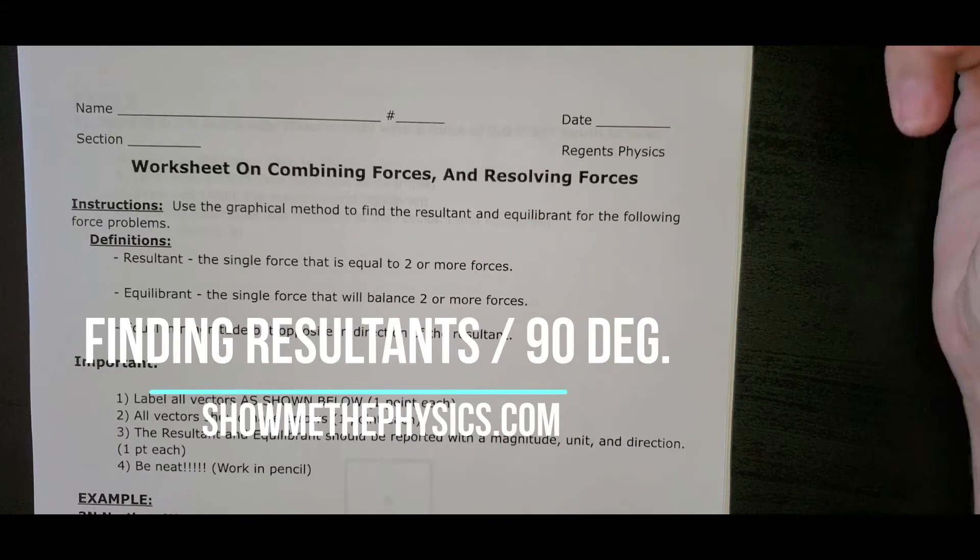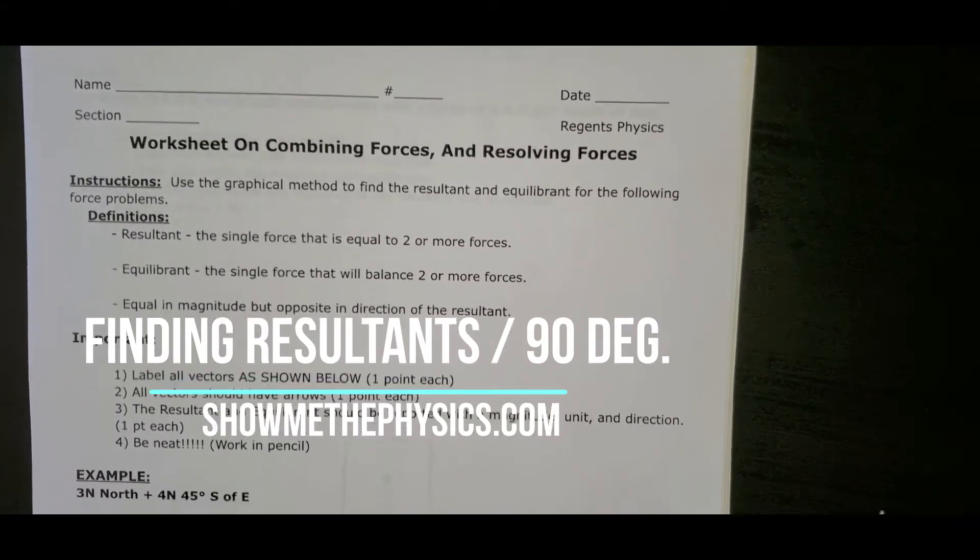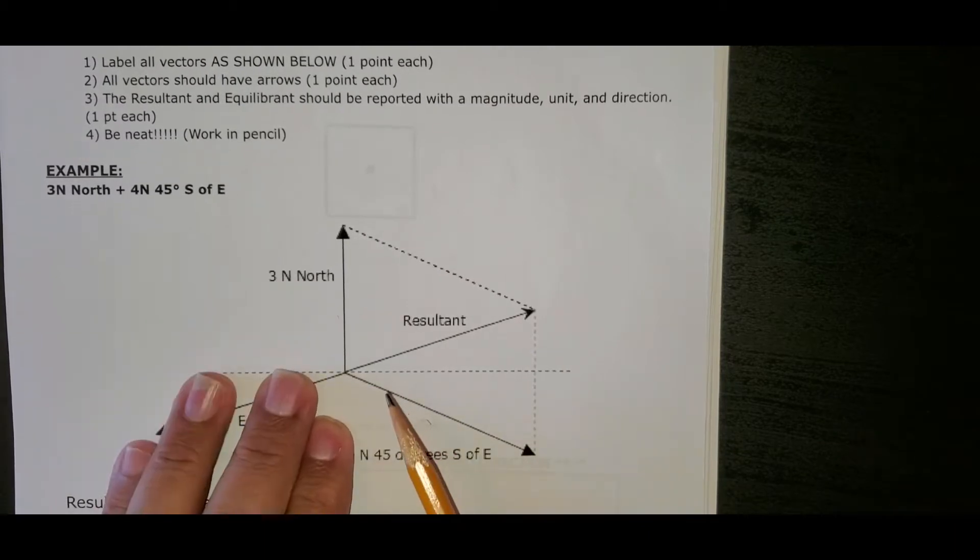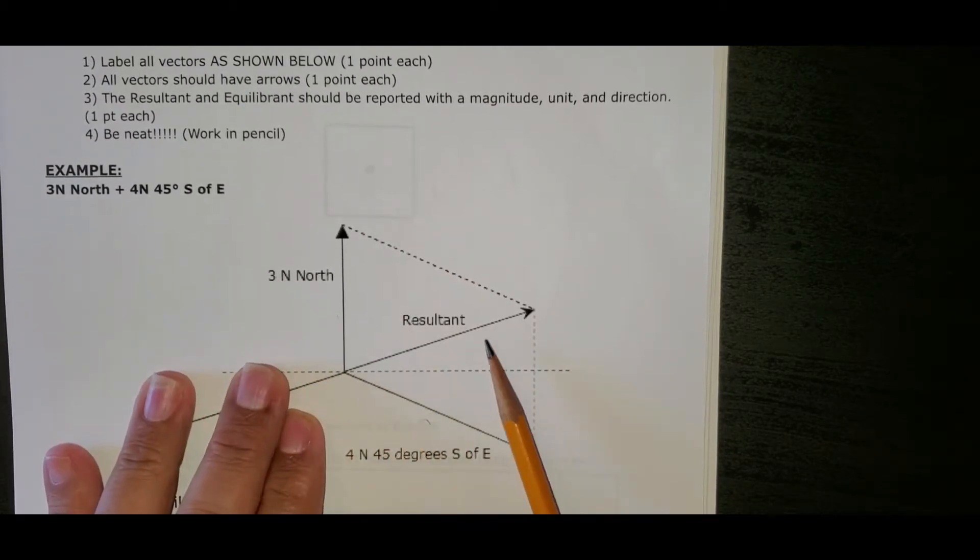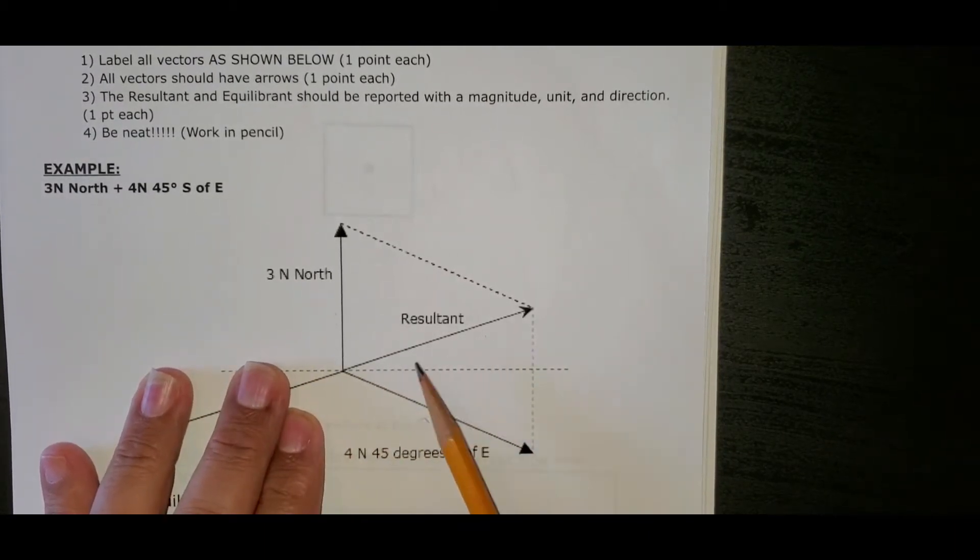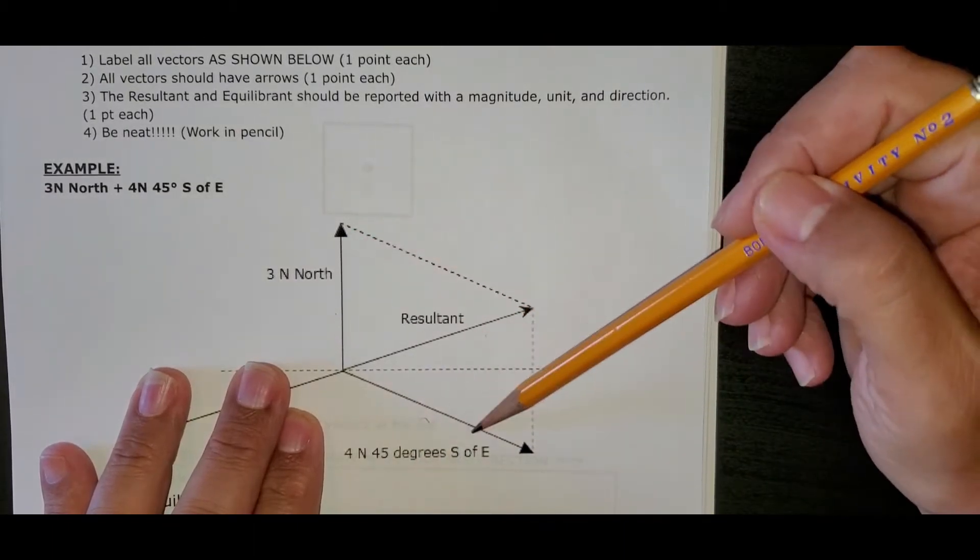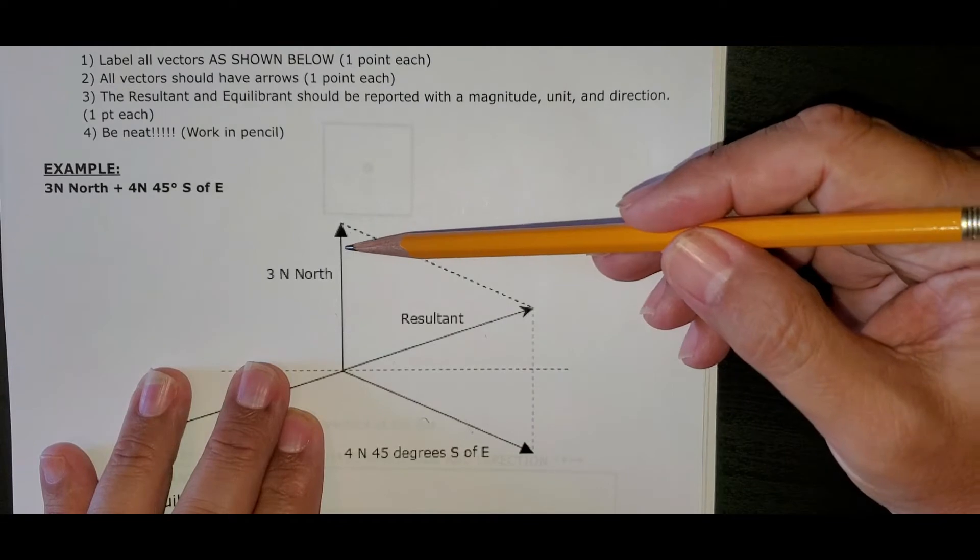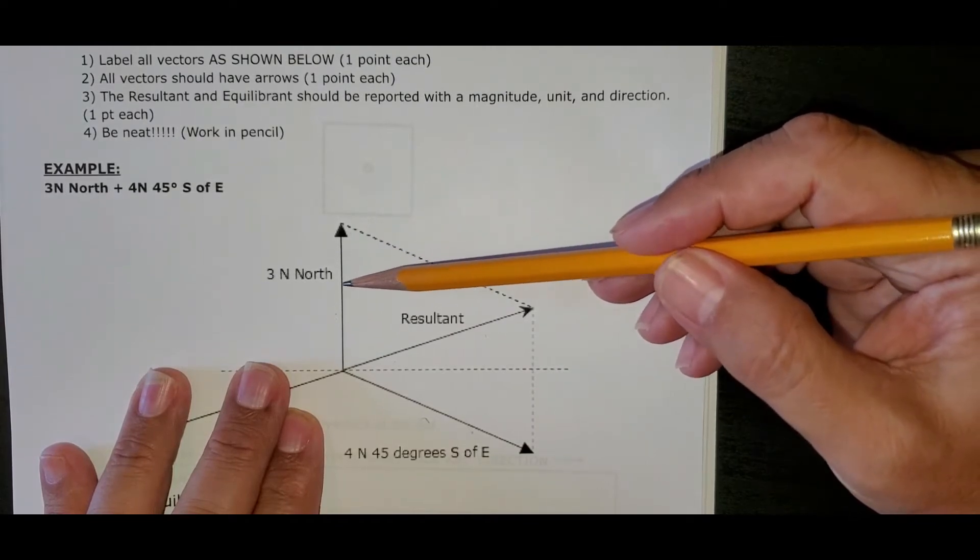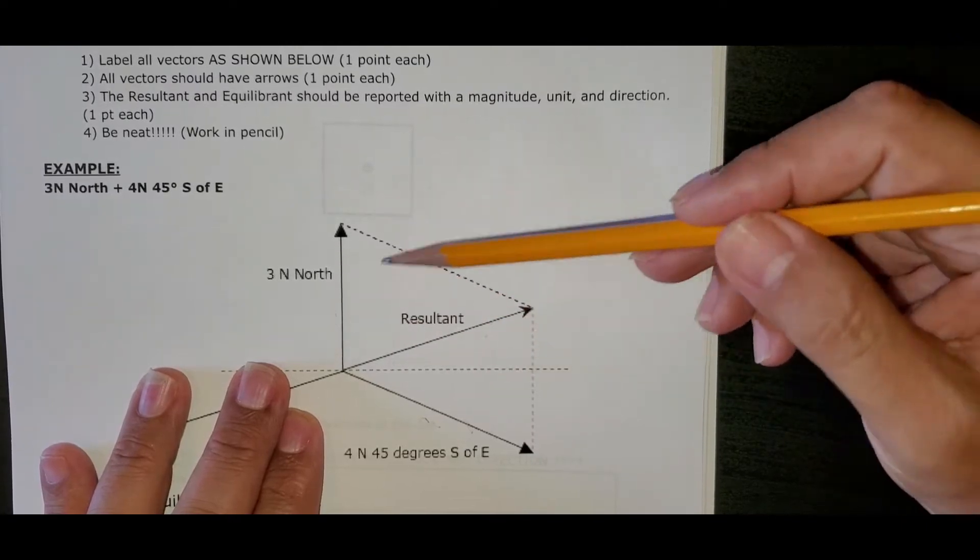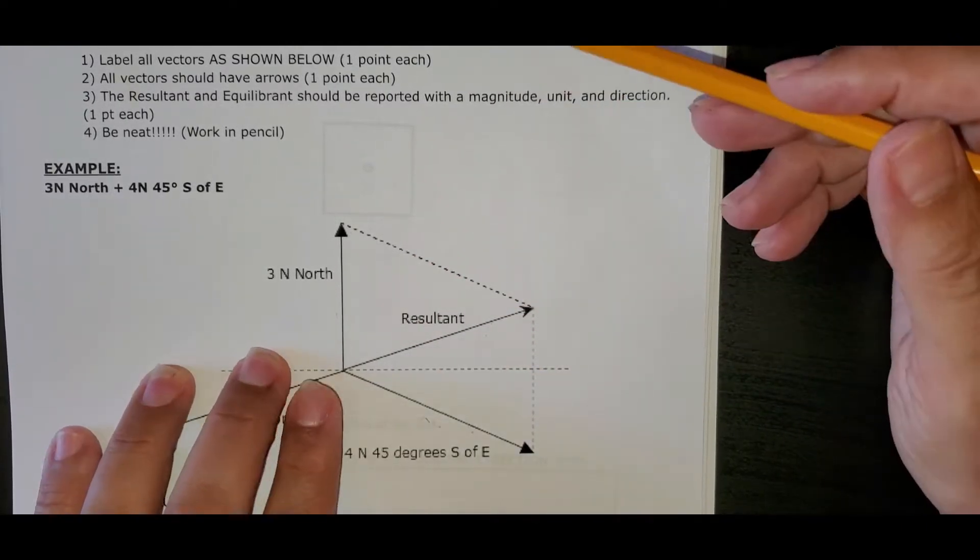Hello. In this video, I want to show you how to take two forces acting on an object and find what's called the resultant. The resultant is the single force that's the equivalent in result as these two forces. Whether the body had these two forces on it or this single force, it would feel the same thing.